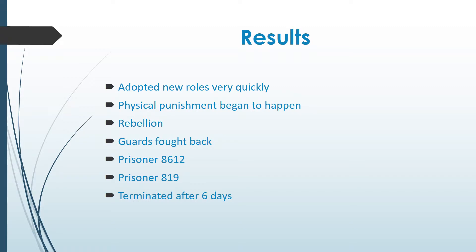The guards and prisoners settled into their roles within a very short time, with the guards settling in more quickly and easily. Within just a few hours, some guards began to harass the prisoners. At 2:30am, prisoners were awakened by whistles for the first of many counts, which guards used to exercise control. Prisoners began to tell tales on each other, and some even sided with the guards against prisoners who did not obey the rules. Prisoners were taunted with insults, petty orders, and were often dehumanized.